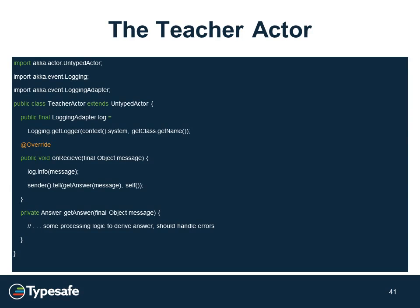The teacher receives a message in the onReceive method, logs it, and then sends sender.tell(getAnswer(message)). That getAnswer method is a private internal method within the actor where you put your logic — you parse the message, determine what it's asking, compute the answer, create a new answer message, inject the answer into it, and return it. I composed that all into a single line, though you could separate it. To keep the example simple, I took this approach.